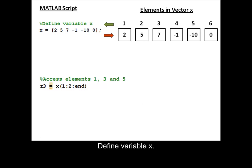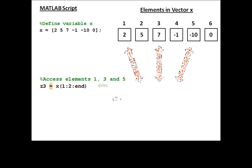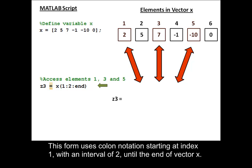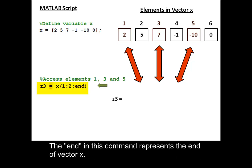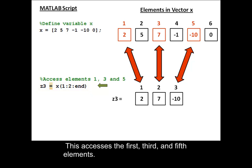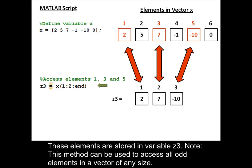Define variable x. This form uses colon notation starting at index 1, with an interval of 2, until the end of vector x. The 'end' in this command represents the end of vector x. This accesses the first, third, and fifth elements. These elements are stored in variable z3.